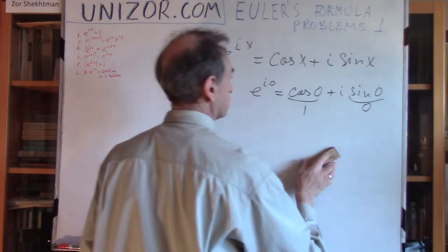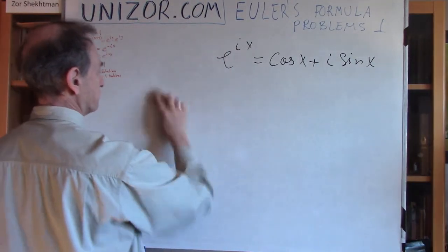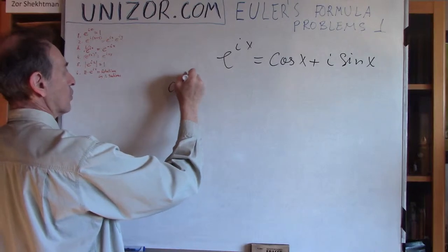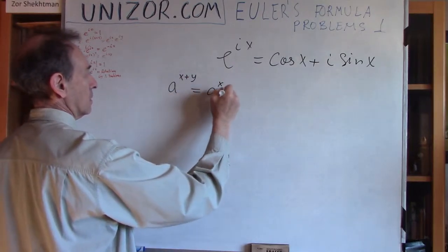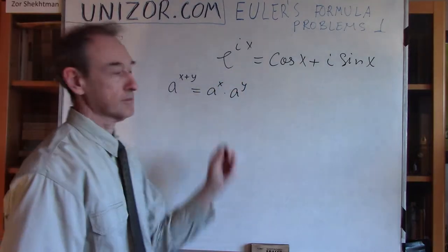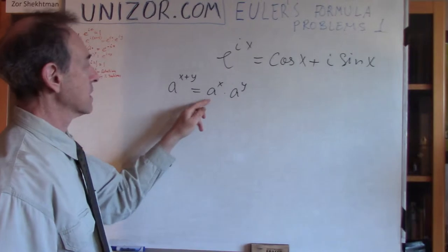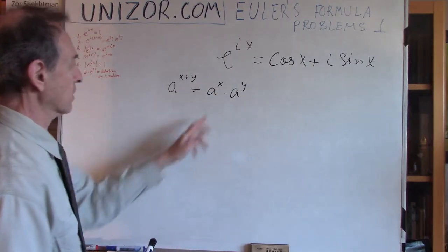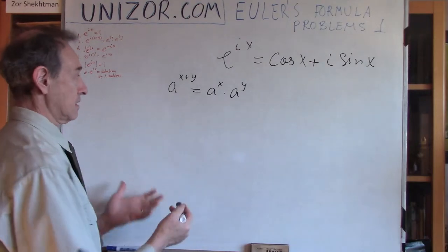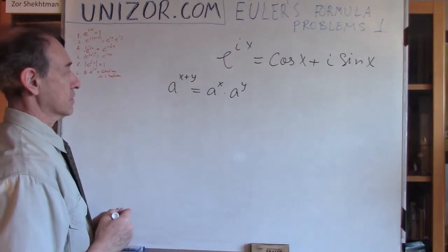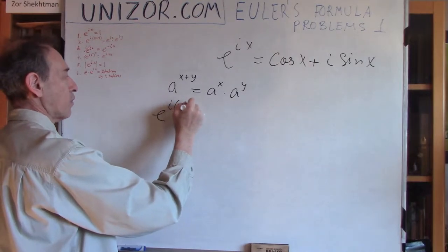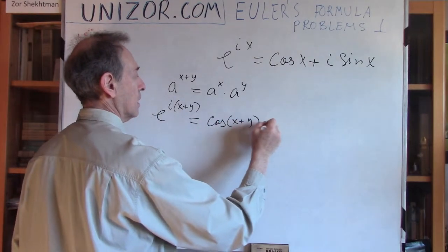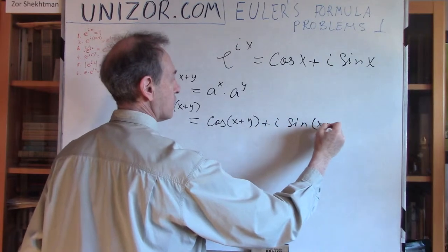Okay, next. A little bit less trivial. Now, this less trivial rule is basically one of the fundamental rules of exponents: the sum of exponents is a product of separate expressions for the same base, where each exponent is used separately and then we multiply the results. Is this held for this particular definition? Well, let's try. e to the power of i(x+y) equals cosine of (x+y) plus i sine of (x+y), according to the definition.